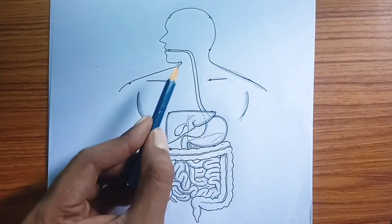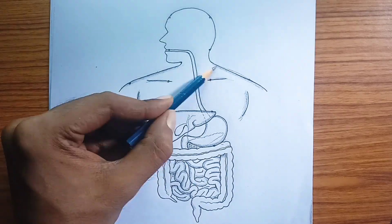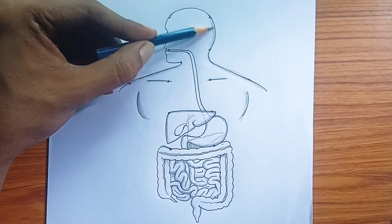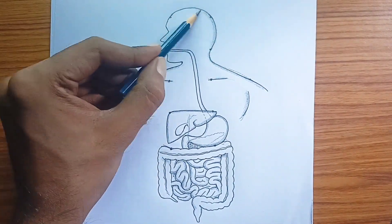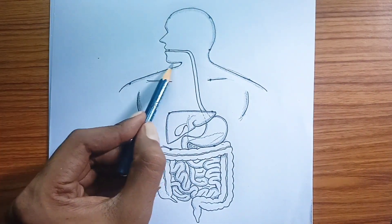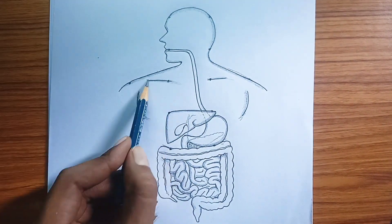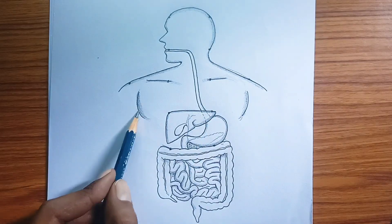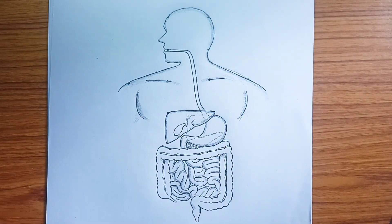In summary, the diagram provides a clear anatomical overview of the main organs of the digestive system, showing the pathway food takes from ingestion to elimination.